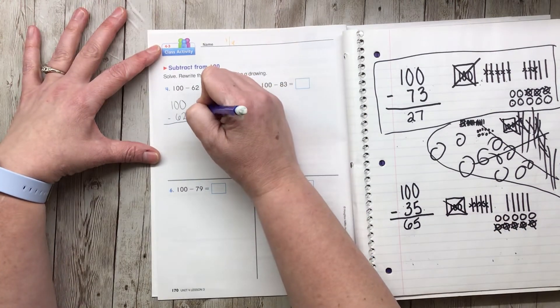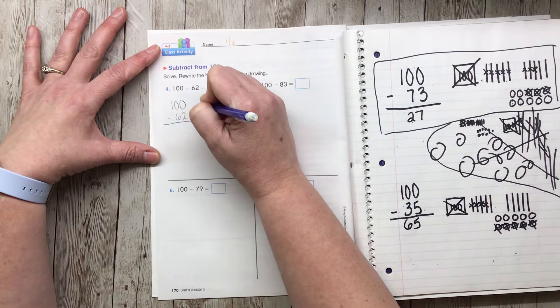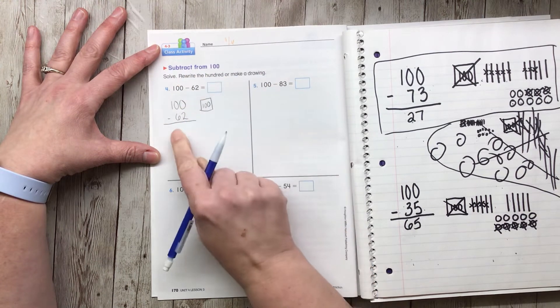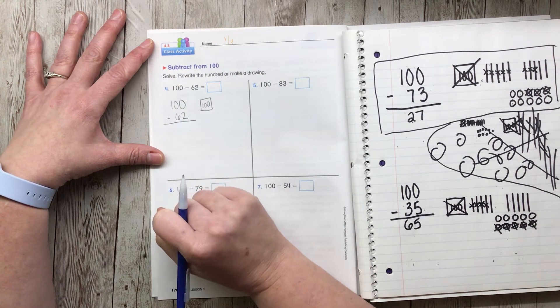So remember, we're going to start out with our hundreds box, and we do not draw the number on the bottom when we're doing subtraction.